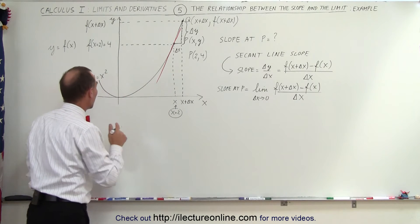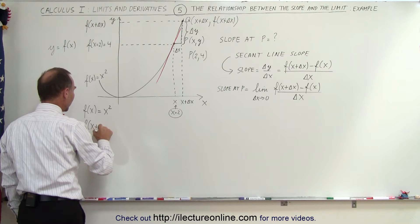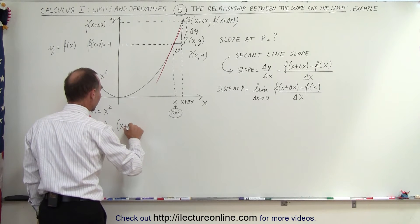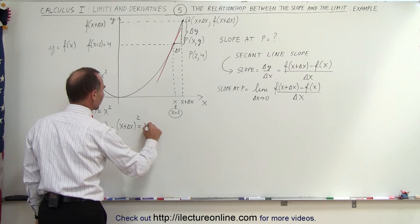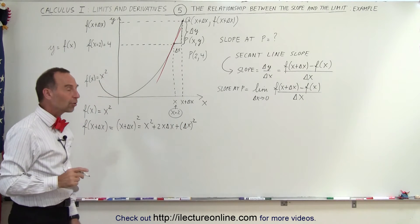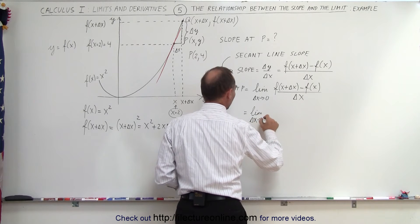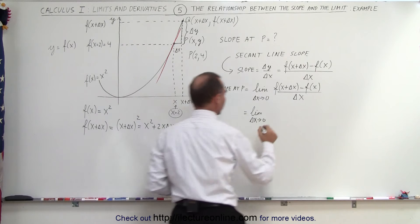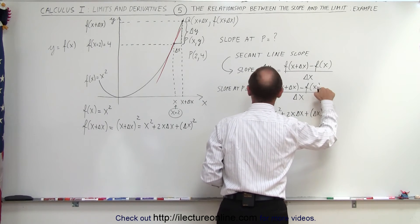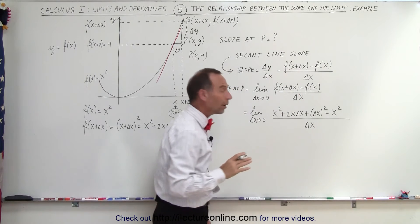What does that mean for this particular function? Remember that f of x equals x squared. That means f of x plus delta x is found by replacing every x with x plus delta x. So we take x plus delta x and square it, which gives x squared plus 2 times x delta x plus delta x squared. So we now have the limit as delta x goes to 0 of that quantity minus f of x, which is x squared, all divided by delta x.